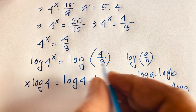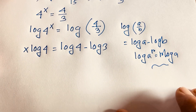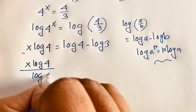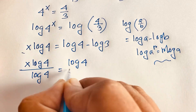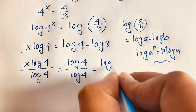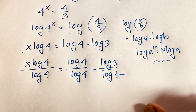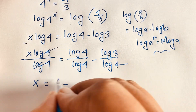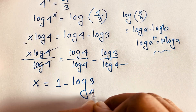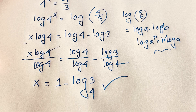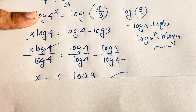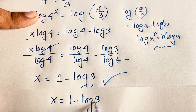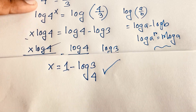I apply this law in this expression. Now, if I divide both sides by log 4, then x times log 4 divided by log 4 equals log 4 divided by log 4, minus log 3 divided by log 4. The log 4 over log 4 cancels to 1. We find x equals 1 minus log 3 base 4. This is our final answer for this exponential equation.